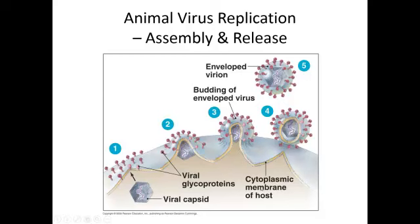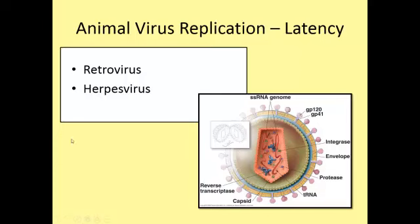In animals, you often have an immune response to this replication cycle — you feel sick — or the virus causes damage, causing disease. But there are some viruses, specifically the retrovirus and the herpesvirus families, which undergo latency. That's where you have the virus inside of the host cell not causing any symptoms. With the retrovirus, it's like the lysogenic replication cycle of a bacteriophage.